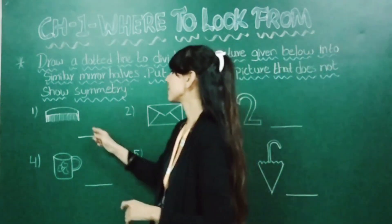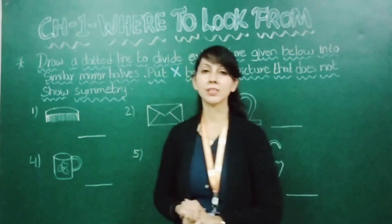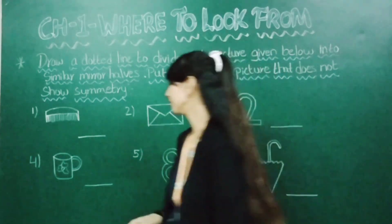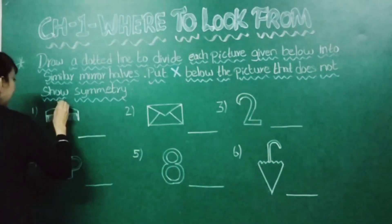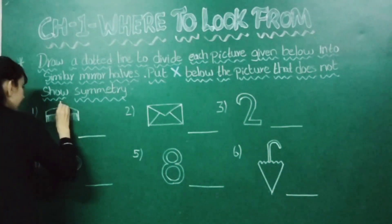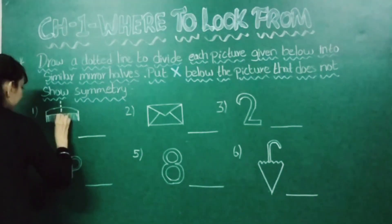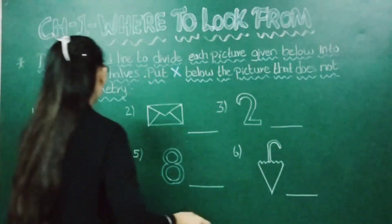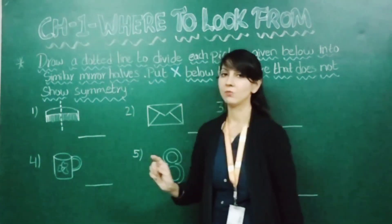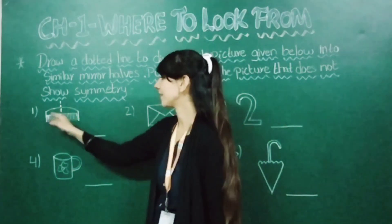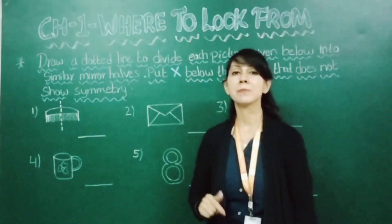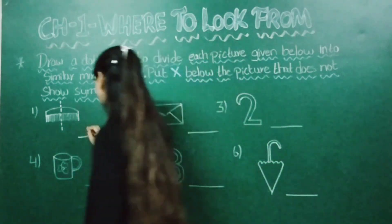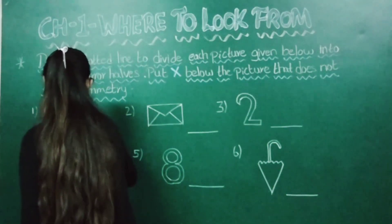The first picture is a comb. Let's draw a dotted line right at the center. Both sides are equal, so this shows symmetry. We will put a tick here.